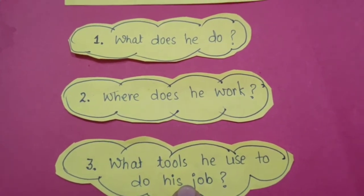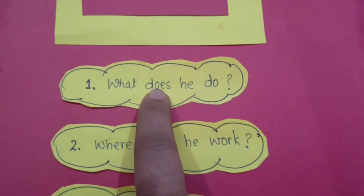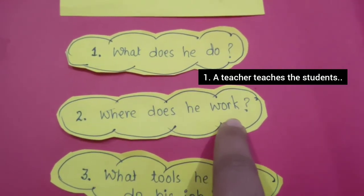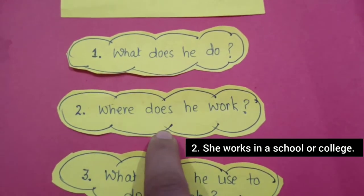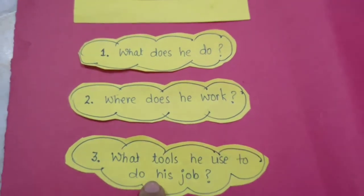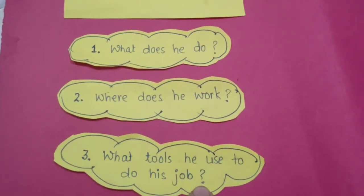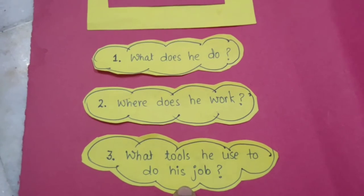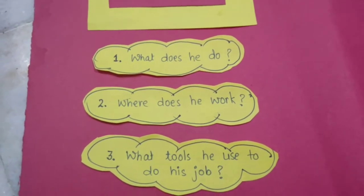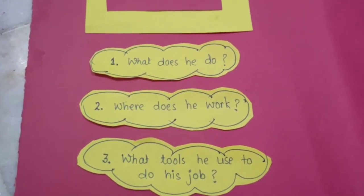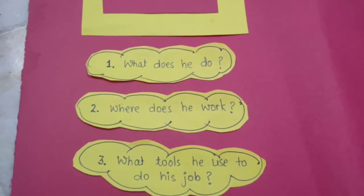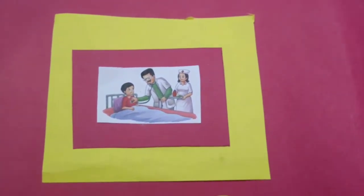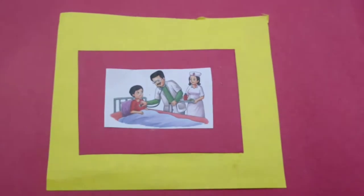Now let's talk about a teacher. What does a teacher do? A teacher teaches the children. Where does she work? She works in a school. What tools does she use to do her job? She uses a whiteboard, marker, duster and so many other tools — notebooks, books, pen, pencil and so many things. So easy. Making three sentences about any picture is a piece of cake. I am sure now you agree with me.